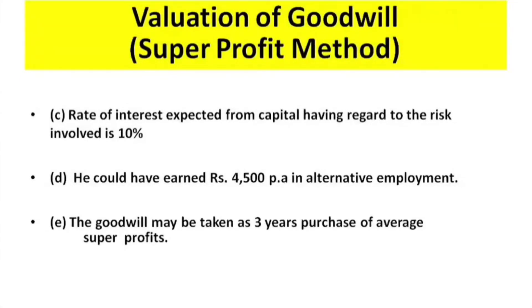The goodwill may be taken as 3 years' purchase of average super profits. This is a straightforward problem. The first step is to calculate the average profit, and the second is to calculate the normal profit, so we can find the super profit.